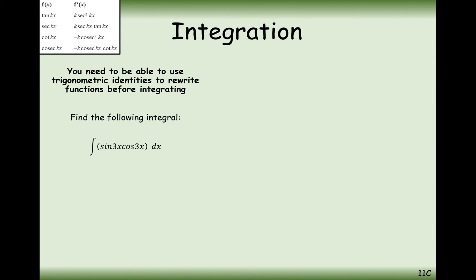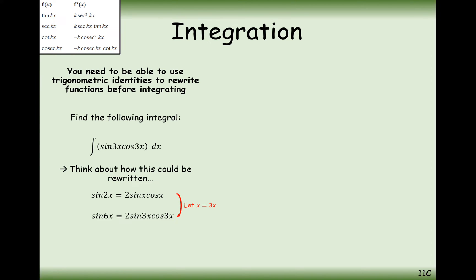That's how we integrate tan squared. Another one might be sine 3x cos 3x. This really looks familiar — where you've got a sine and a cos multiplying together, it appears in the sine double angle formula. Recall sine 2x equals 2 sine x cos x. If we triple the angles on the right-hand side and left-hand side, we get sine 6x equals 2 sine 3x cos 3x. Halving that gives us a half sine 6x equals sine 3x cos 3x.